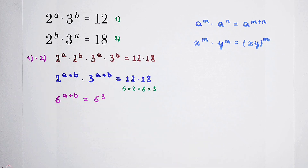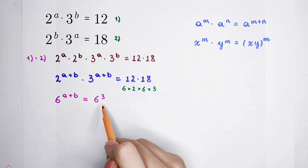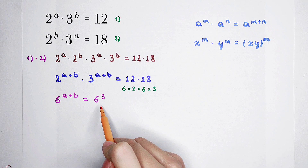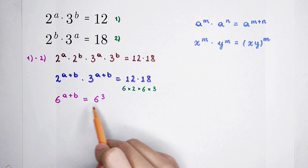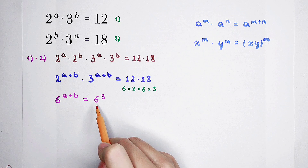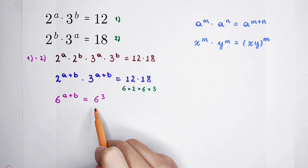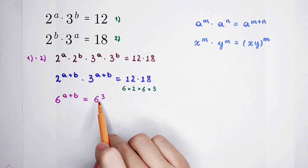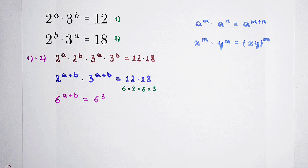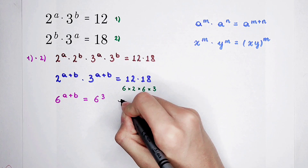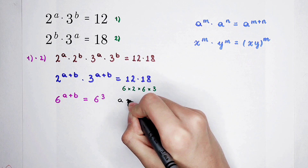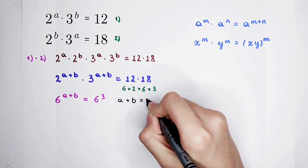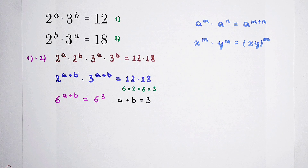The left hand side and the right hand side have the same base and the same value, so their exponents are also the same: a plus b is equal to 3. Not only do we find their product, but we use division as well.